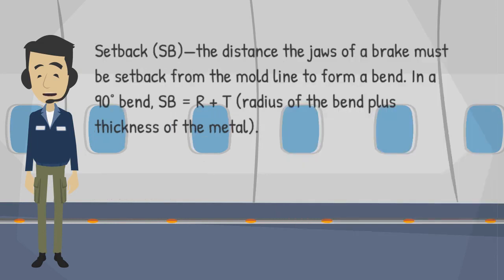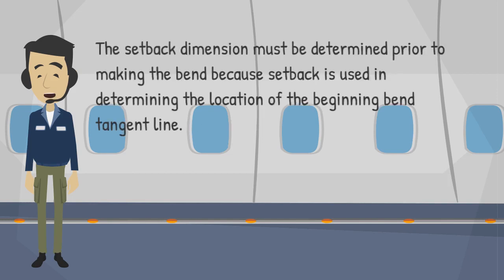Setback (SB): the distance the jaws of a break must be set back from the mold line to form a bend. In a 90-degree bend, SB equals R plus T — the radius of the bend plus the thickness of the metal. The setback dimension must be determined prior to making the bend because setback is used in determining the location of the beginning bend tangent line.